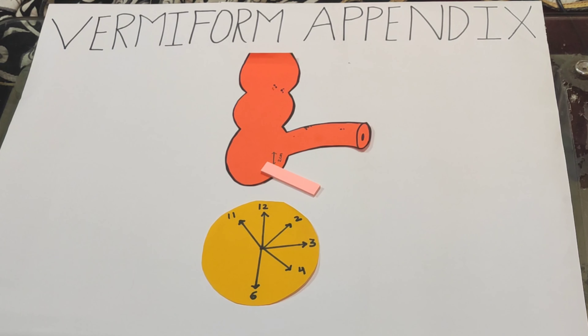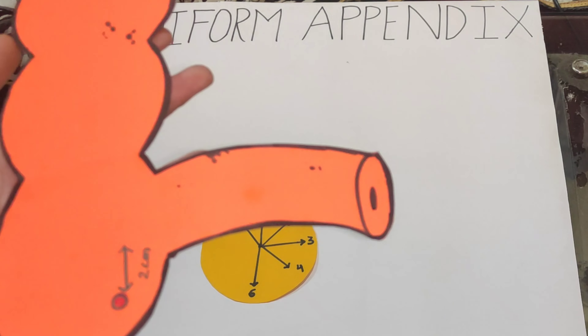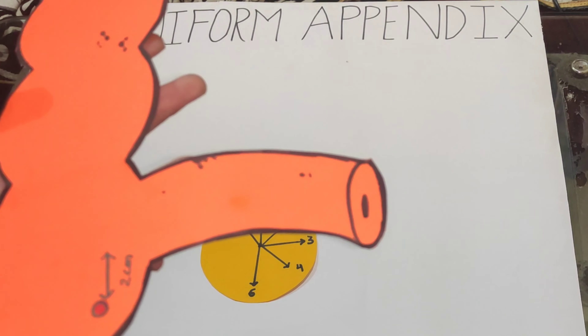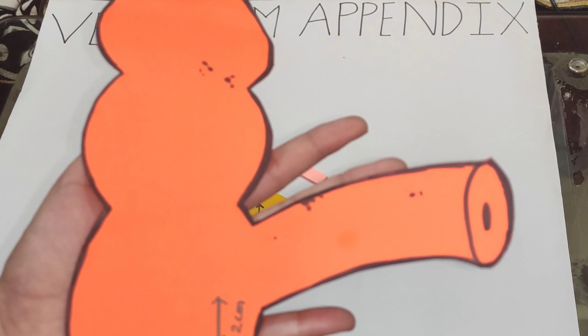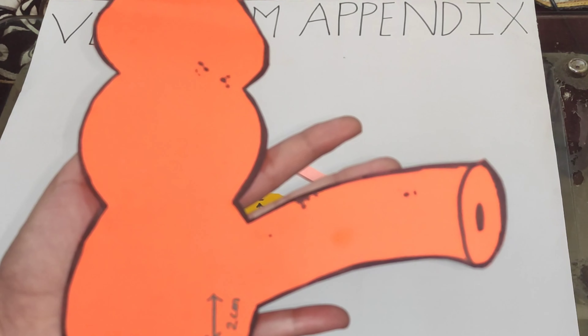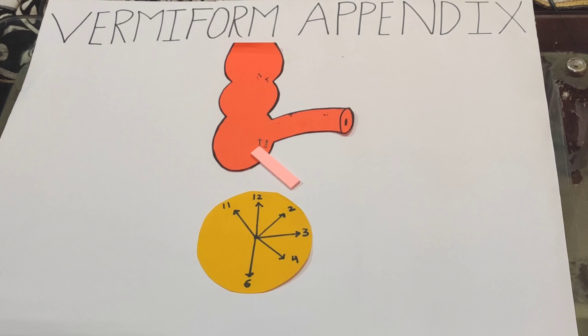Position of appendix: the appendix lies 2 cm below the ileocecal junction. This is the cecum and this is the terminal part of the ileum. The appendicular orifice lies 2 cm below the ileocecal junction, at the posterior medial wall of the cecum.